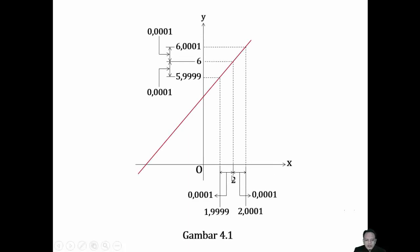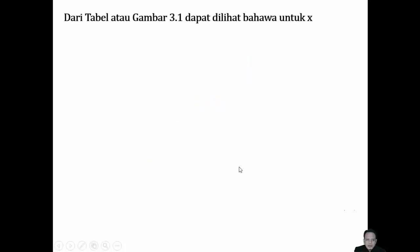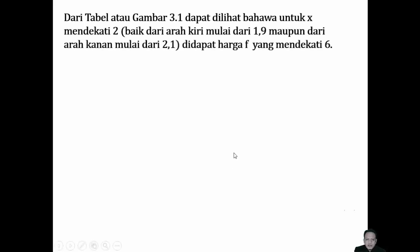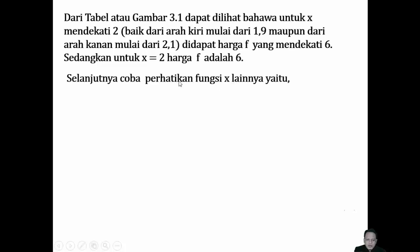Kalau kita gambarkan grafiknya, dari sebelah kirinya kemudian dari sebelah kanannya, maka nilai dari fungsi x plus 4 itu semakin mendekat ke nilai 6. Dari kedua sisi nilai fungsinya adalah 6 — semakin dekat ke 2, dari sebelah kiri maupun dari sebelah kanan, nilainya akan mendekati 6. Dari tabel tadi didapati harga fungsi yang mendekati 6. Sedangkan untuk x sama dengan 2, maka nilai fungsinya adalah 6 — fungsinya bisa didefinisikan pada nilai x sama dengan 2.